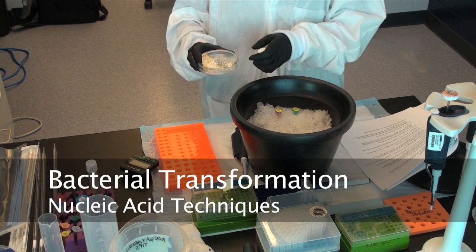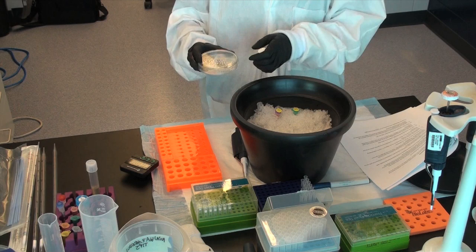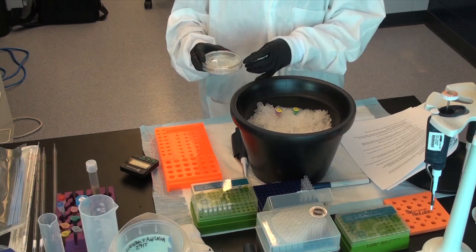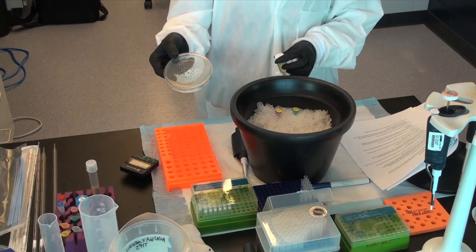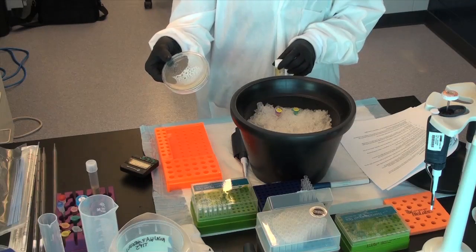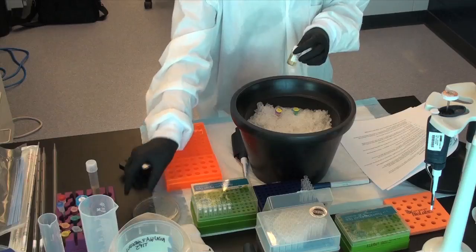Bacterial Transformation. Step 1: Pre-warm and dry two LB Luria-Bertani agar plus ampicillin selective media plates by placing them in the 37 degrees Celsius incubator, media side up, to remove excess moisture.